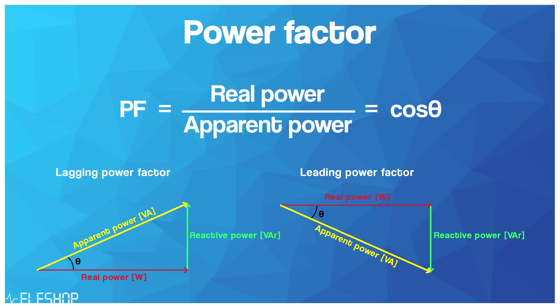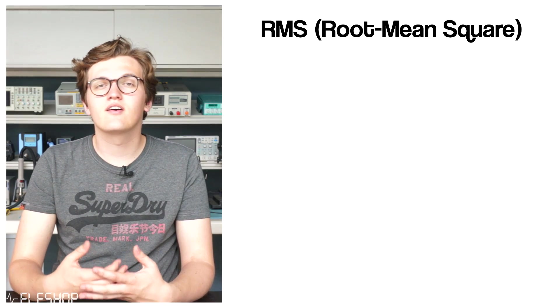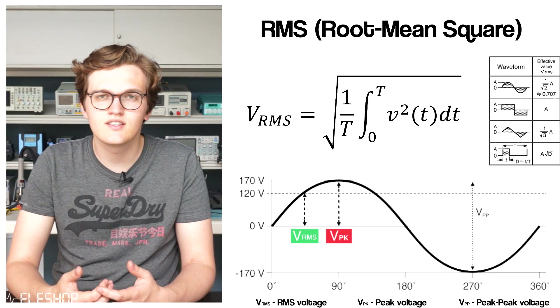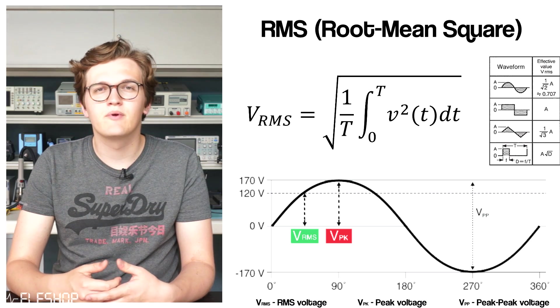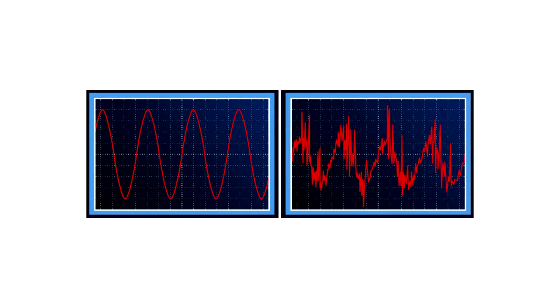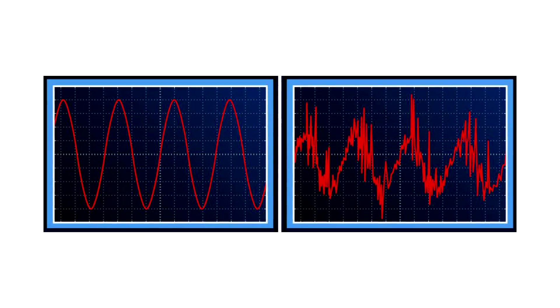The apparent power can be calculated by multiplying the RMS current and voltage absorbed by a device. RMS stands for root mean square and can be calculated with this formula. The RMS is basically the equivalent DC value of an AC waveform and can be measured, for instance, with a true RMS multimeter. Since AC signals can be noisy due to other noise sources, true RMS is needed to take reliable measurements. True RMS is more accurate than just RMS because it takes the noise into account.